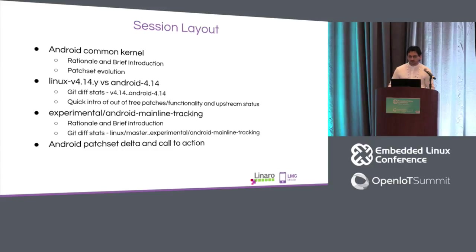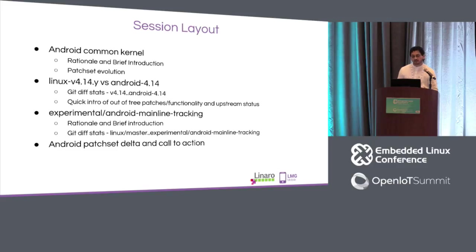We'll see how the patch set has evolved over the years, starting from 2009 — it's been almost nine years. Then we'll take a look at the Android patch set in the Android 4.14 tree. I'll compare the patch set as you'll see in the next slides. Then I'll talk about the upstream story of those patches. Next up, I'll talk about Android Mainline Tracking Tree, something new which started a couple of months back, and I'll wrap up with the Android patch set delta and a call to action for the community.